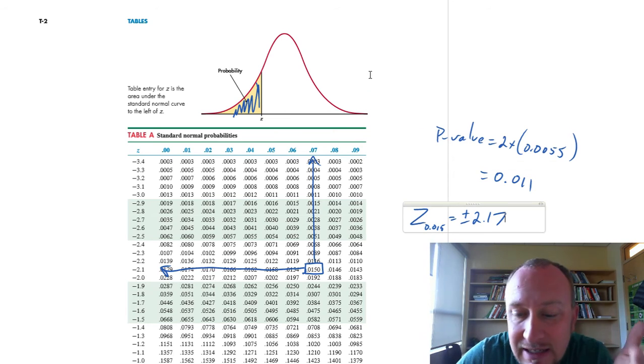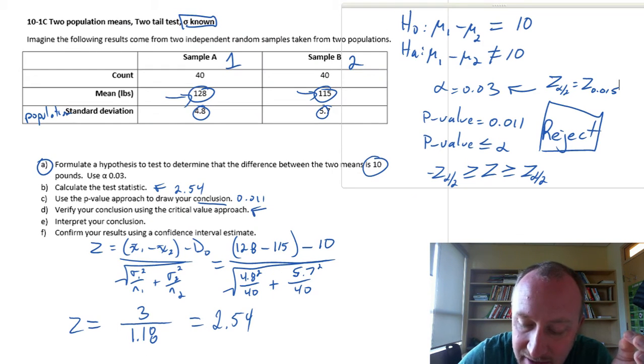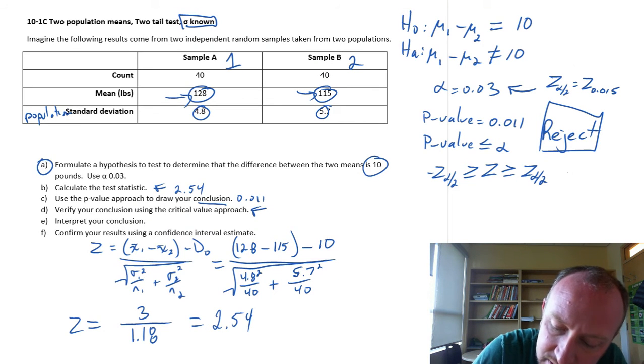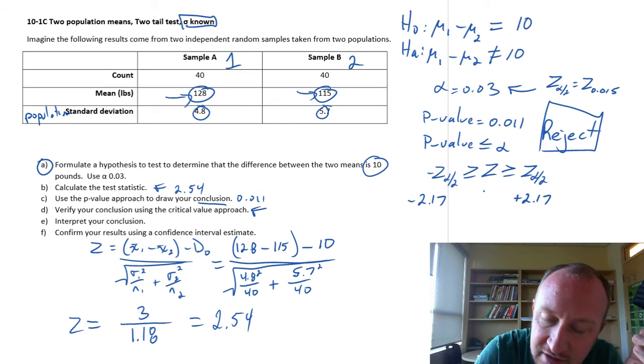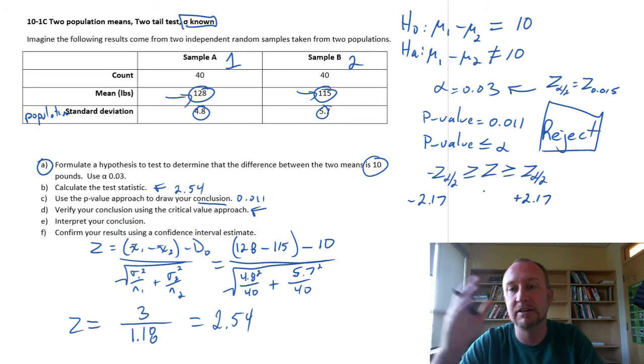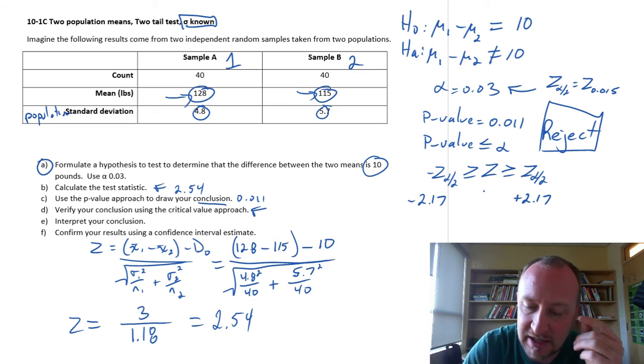So that z for 0.015 is equal to plus or minus 2.17. I say plus or minus, again, because this is a two-tailed test. So I'm going to reject. This is plus 2.17, negative 2.17. We'll reject if it's greater than the positive, smaller than the negative.